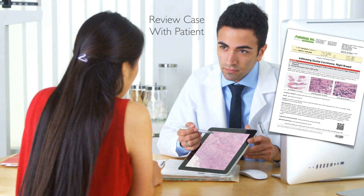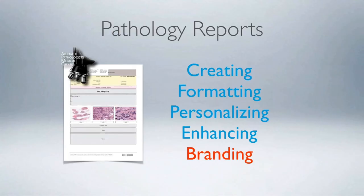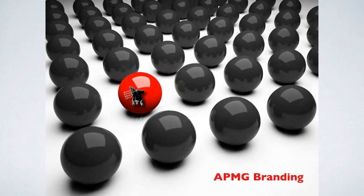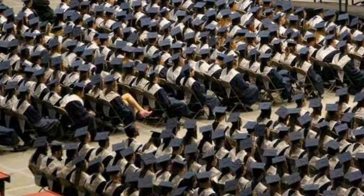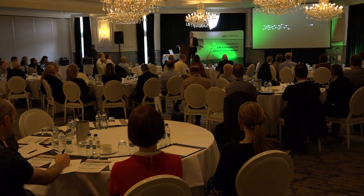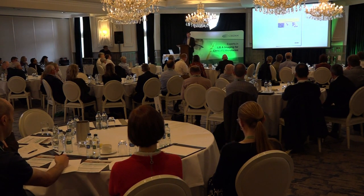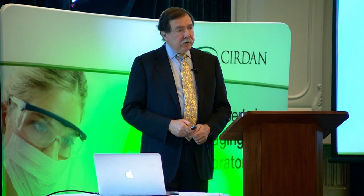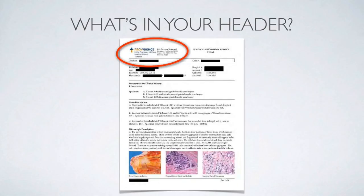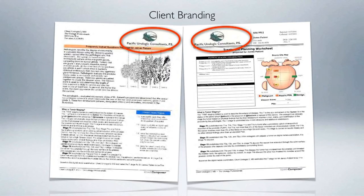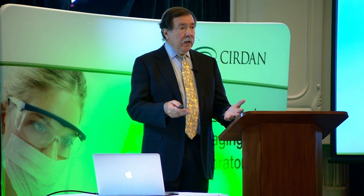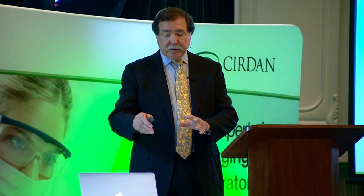Then there's branding. I want my pathology group to stand out from everyone else — to be as visible and distinct as possible. In our report header we include our website URL. We're very eager to add client logos to reports because those clients can pick any lab they want, and we want them to pick us. We position ourselves as a concierge-type service, adding the client's own logo and information to the pieces that go out to the patient.